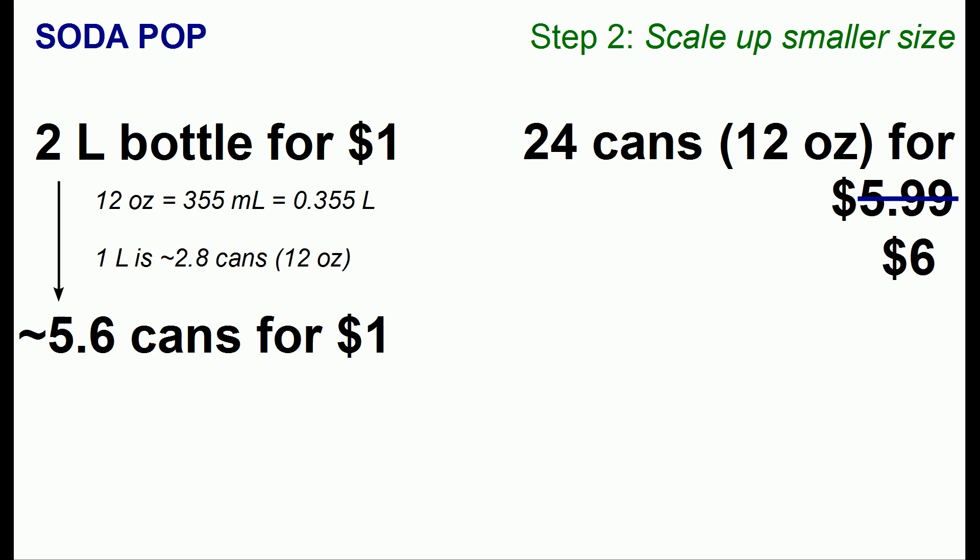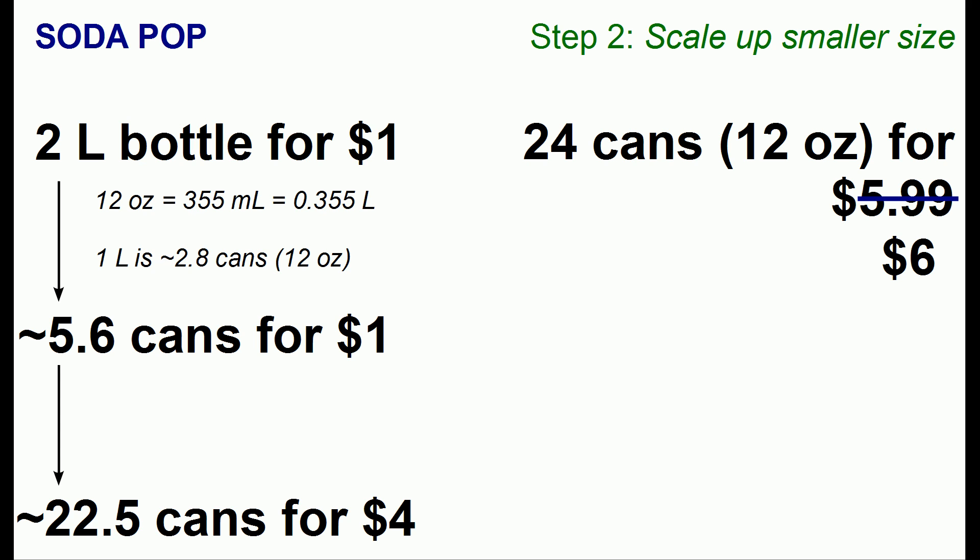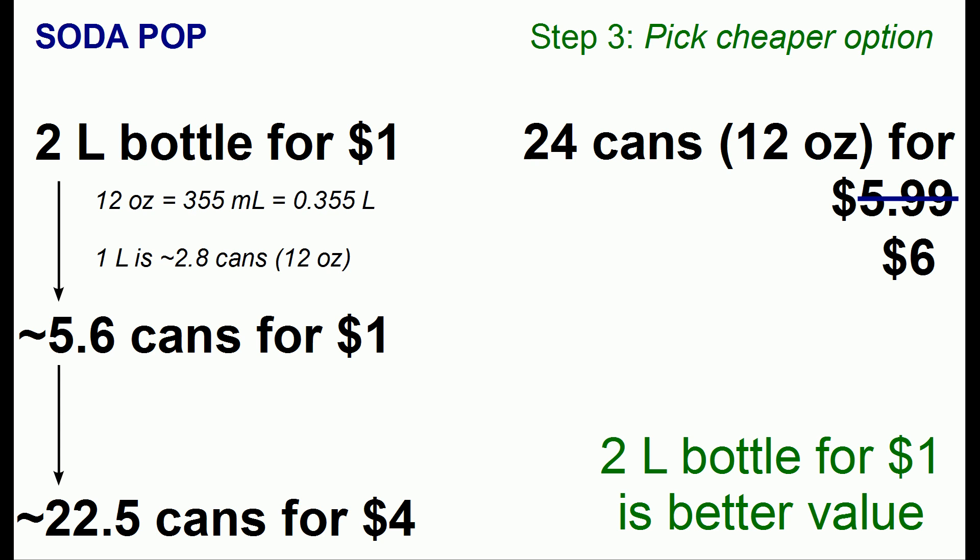We can go ahead and scale up the smaller size. If we buy 4 two-liter bottles that's roughly 22.5 cans for $4.00. Now we need to pick the cheaper option. Neither the quantities nor the dollar amounts exactly match, but with the 2-liter bottle you're paying the rate of 22.5 cans for $4.00 — which is almost 24 cans. So for about 24 cans, do you want to pay $6.00 or $4.00? The cheaper option is clearly the 2-liter bottle. This example shows it's not always the case that buying in bulk is going to be cheaper.